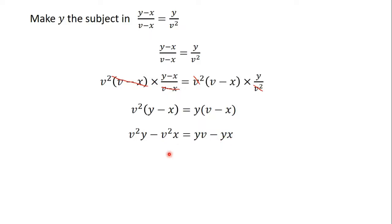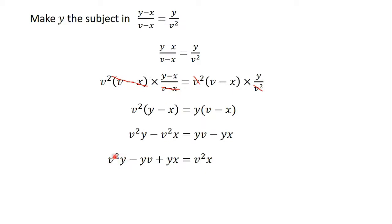Now when you get here, remember that if you want to make a certain variable the subject, you group all the terms with that variable on one side. So here, we want to make y the subject, so we group all terms with y on one side of the equation and the other terms on the other side. The terms with y are v squared y, yv, and yx. I will make sure all those terms are on one side. Then v squared x goes to the other side. So taking yv and yx across, and sending v squared x over, that gives us: v squared y minus yv minus yx is equal to v squared x.